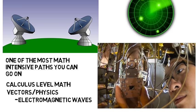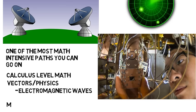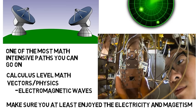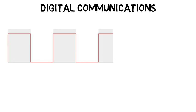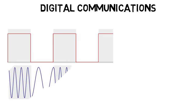Even if you have just taken basic physics in high school, make sure you at least enjoy the electricity and magnetism portion. So an elective class you could take is digital communications, in which you learn how to take a digital signal and encode it into a wave to be sent off wirelessly.